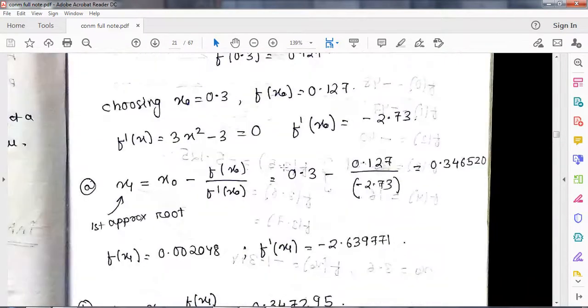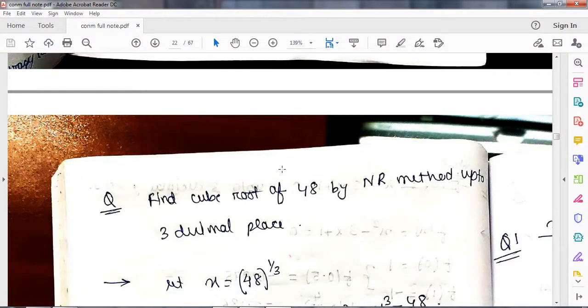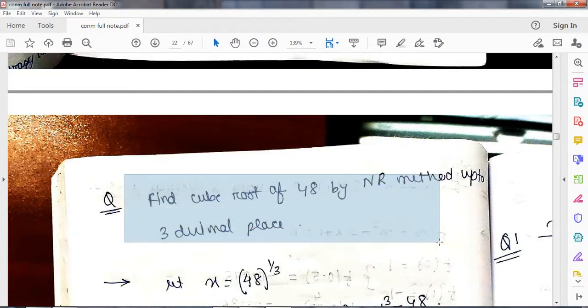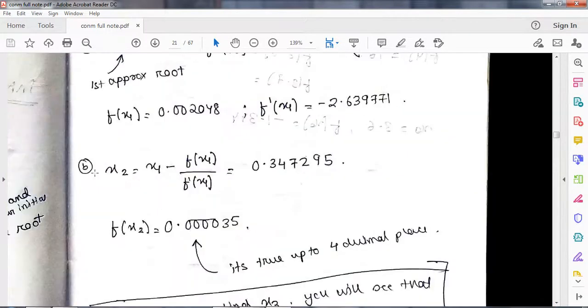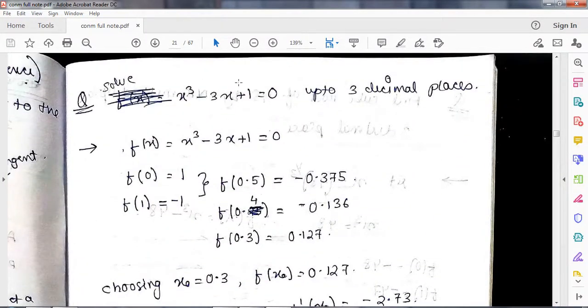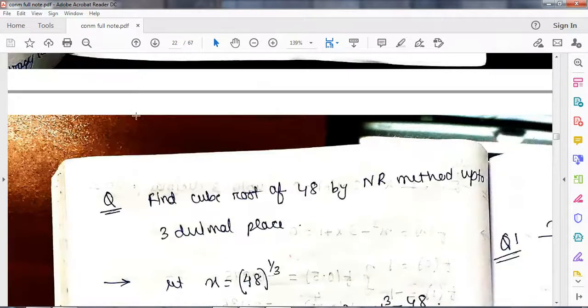Now a question may be asked in this format also. Find cube root of 48 by N-R method up to 3 decimal places. Now in such kind of question, the equation is directly not given to you. It is directly given over here, but here I have not given you a direct equation. All I have done is that I have told you that you have to find out the cube root of 48. So how to do it?